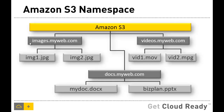For example, if I want to store multiple objects and classify them into images, videos, and docs, I would create buckets named images.myweb.com, videos.myweb.com, and docs.myweb.com. Once I create the buckets, I can start uploading objects into each of them. This is how you lay out your structure for storing objects and creating buckets on S3.